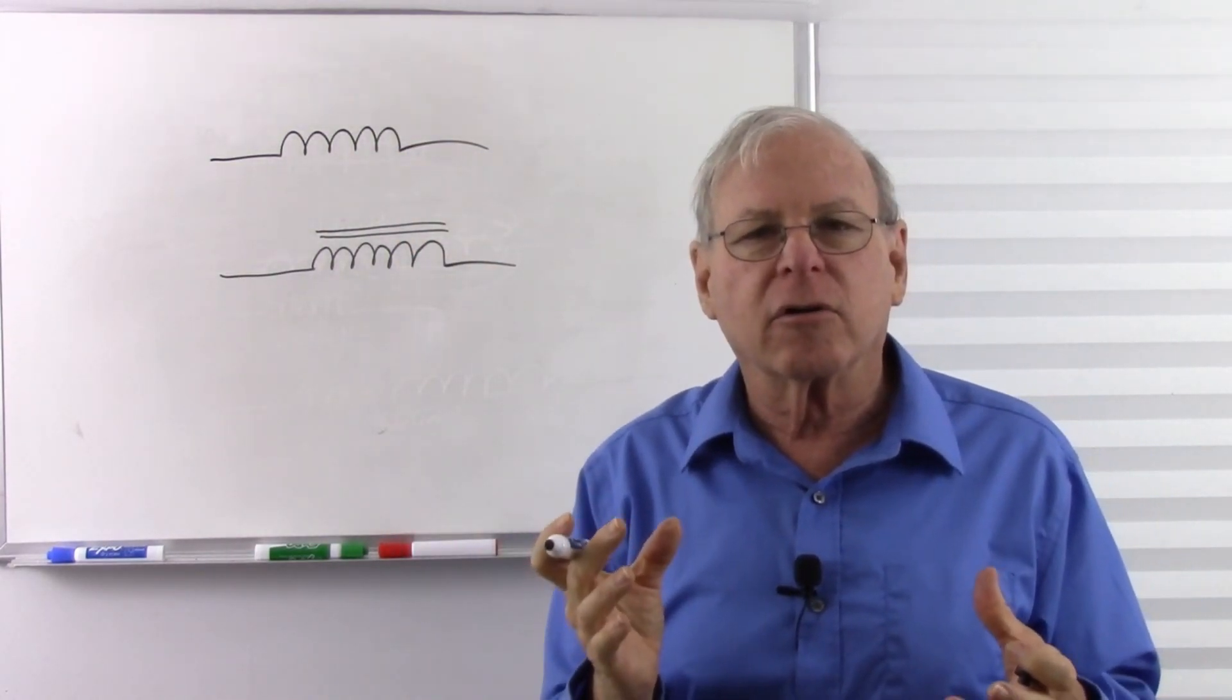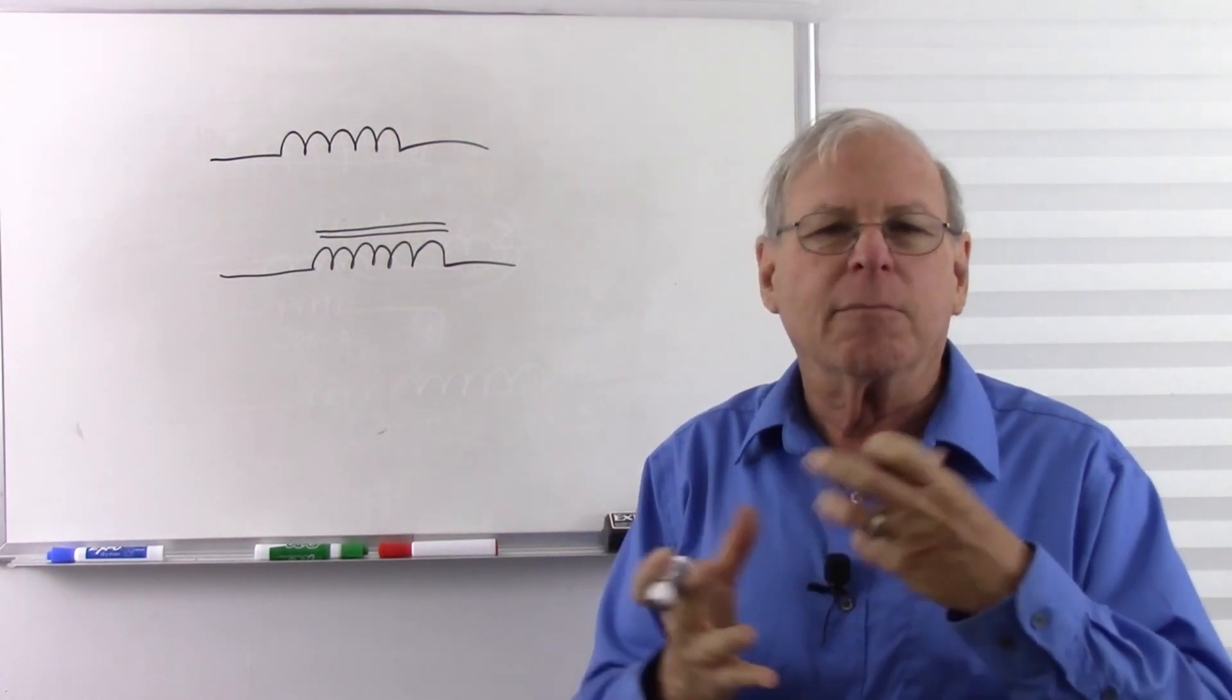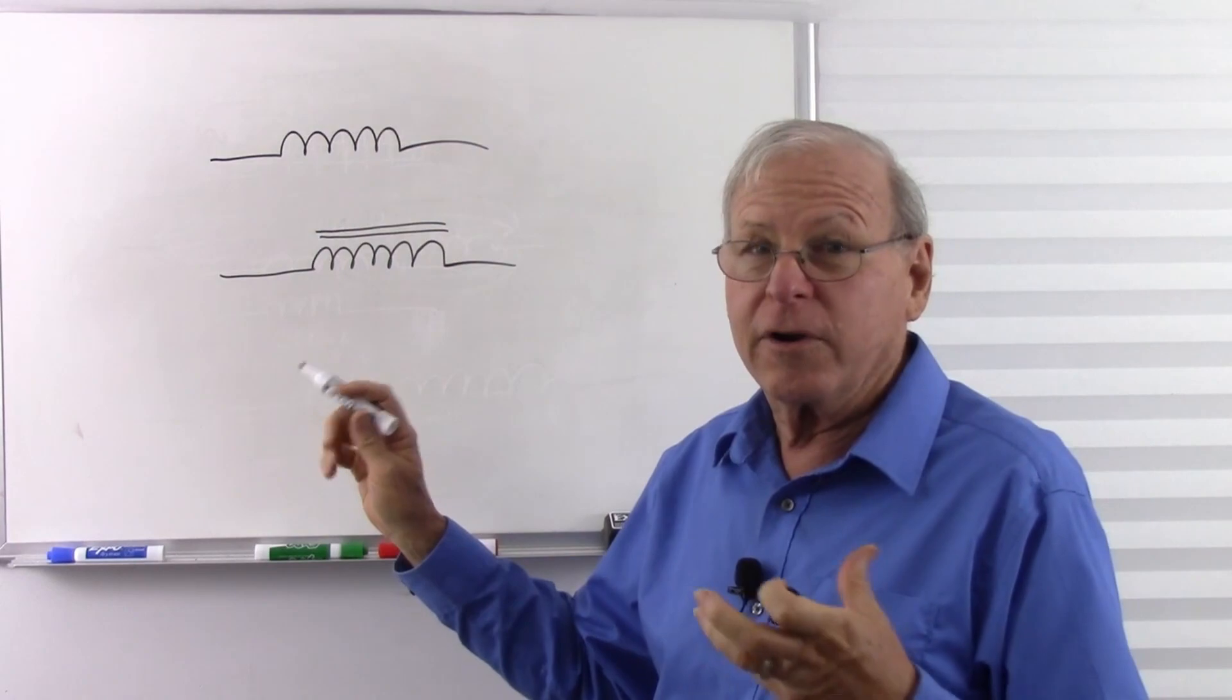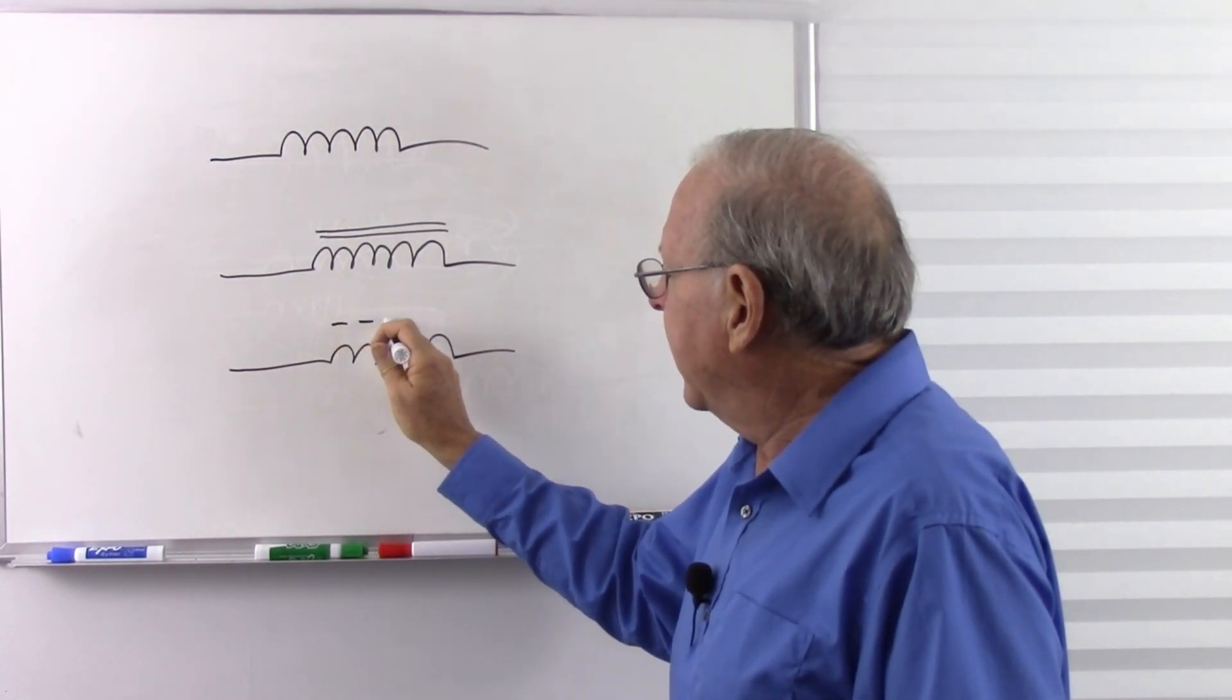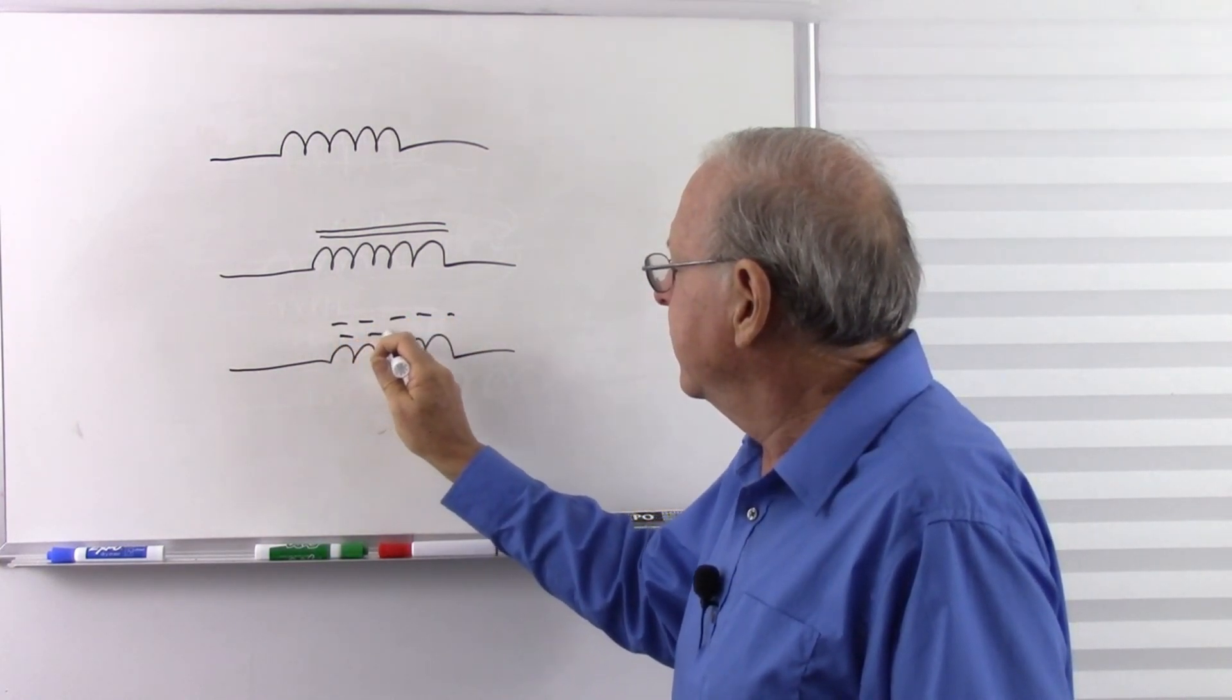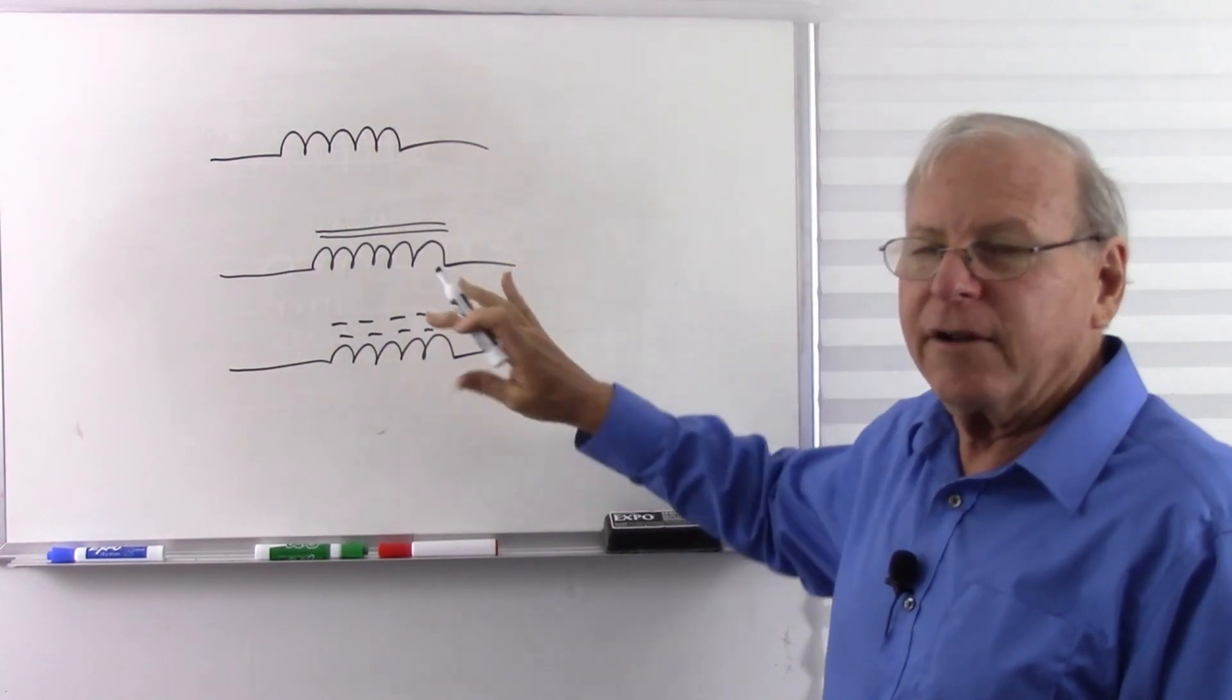Or the other way to do an iron-core is a material called ferrite, which is basically powdered iron mixed with clay. And we can mold that to whatever shape we want, so it's very popular to make cores out of that. And that would be represented by a dashed double line. So air-core, iron-core, and ferrite-core.